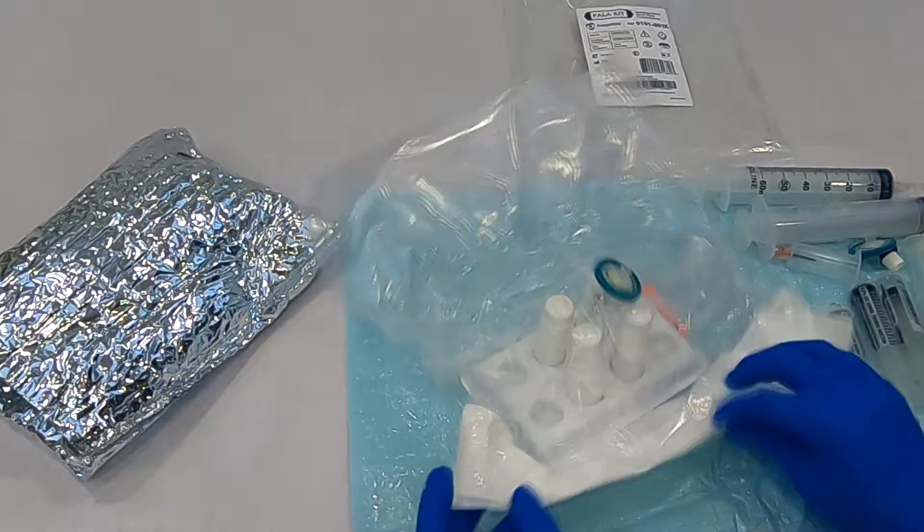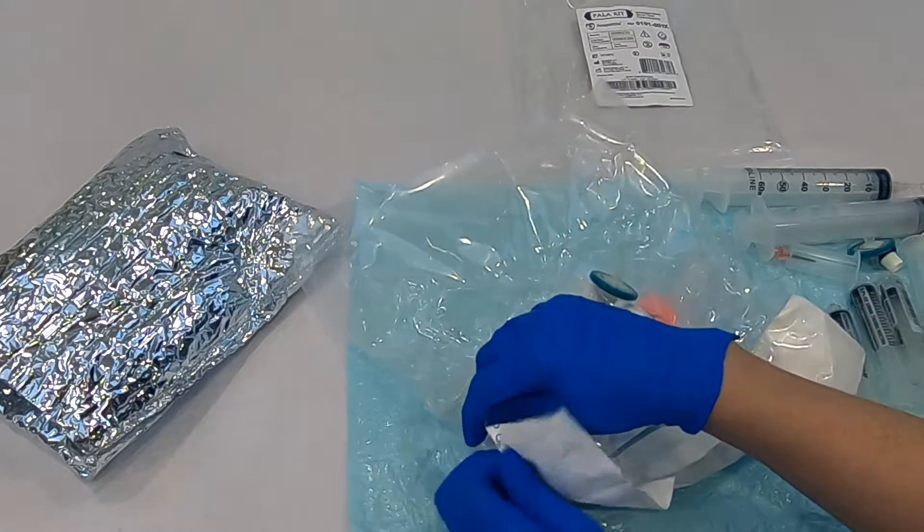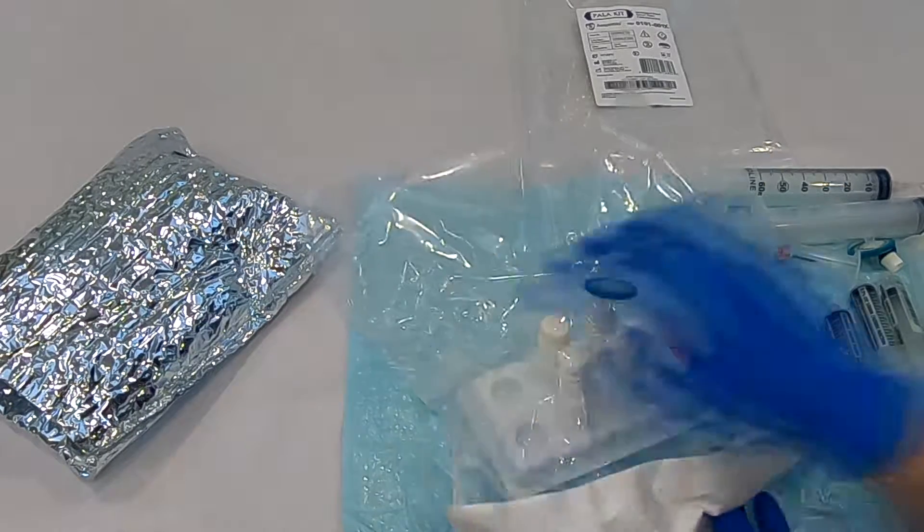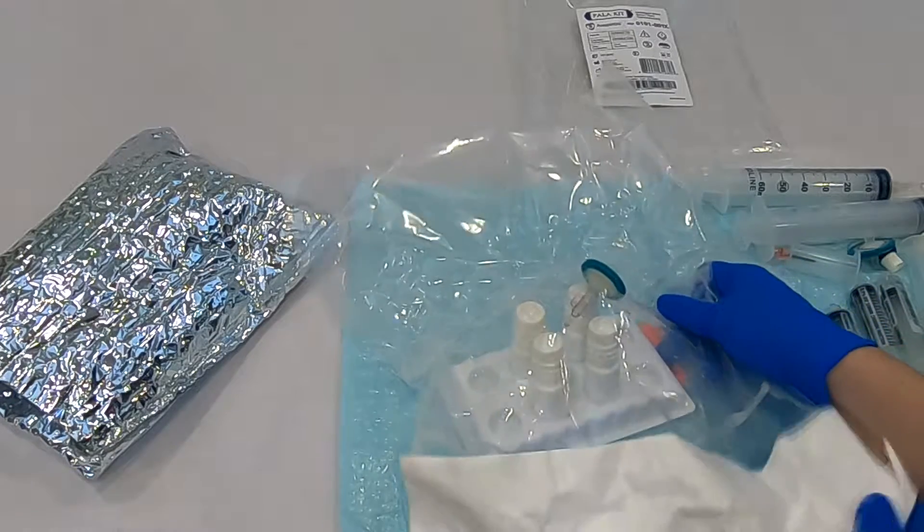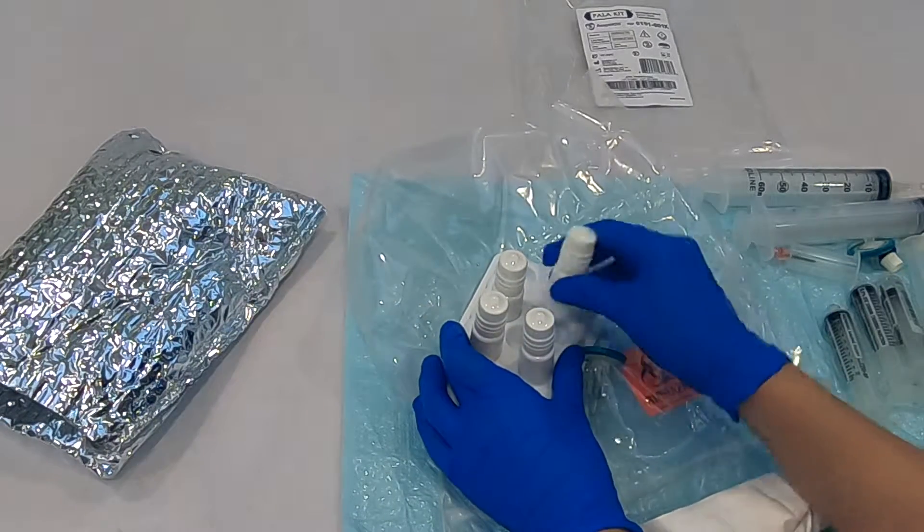After securely capping all of the bottles, open the polysteril kit package and remove the tray. Twist the caps again to ensure they are locked tight.